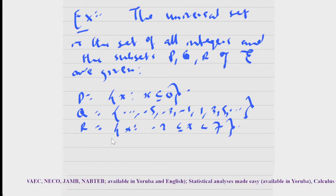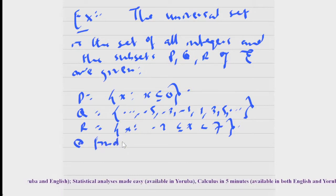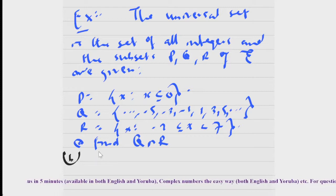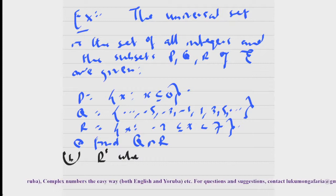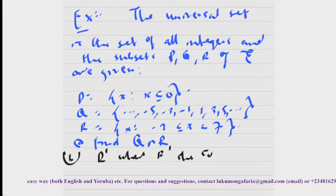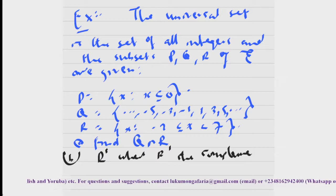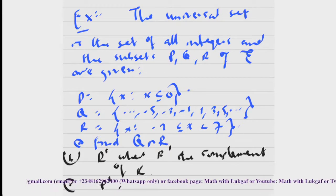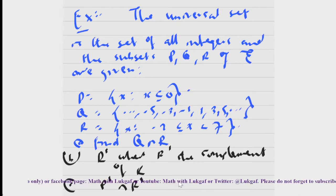Then the question asks us to find: number one, Q intersection R; number two, R complement; and number three, P intersection R.